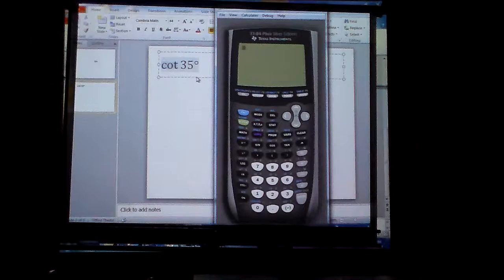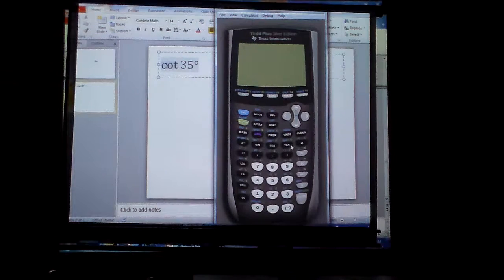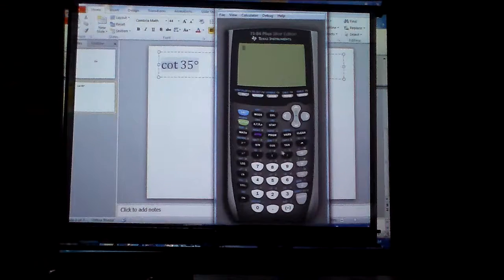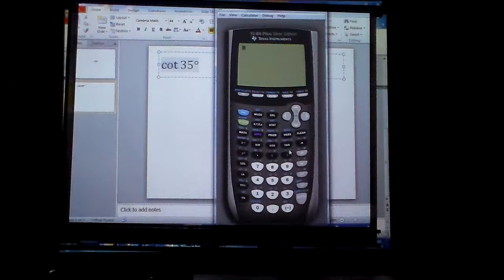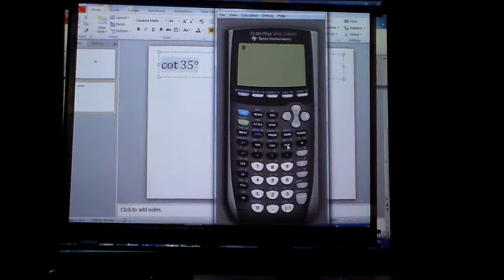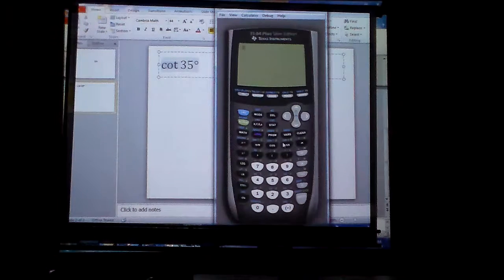Now I have the cotangent of 35 degrees. Wait, there's no cotangent button. Oh man, they didn't want to pay more money to put more buttons on there? That's a business decision. But we don't have to have cotangent, because we know this. The reciprocal of cotangent is tangent.